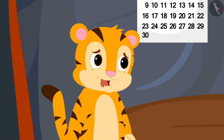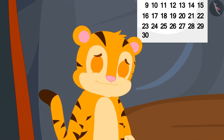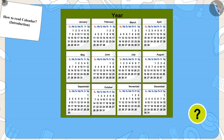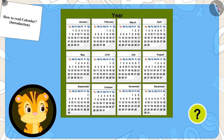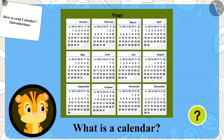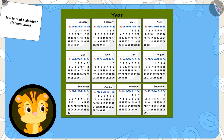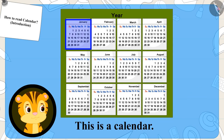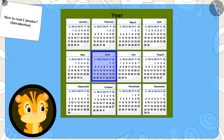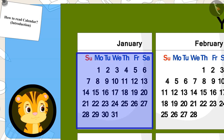He asked his mother, "What is a calendar, Mom?" Kids, do you know what a calendar is? Come see what Sher Khan's mother is explaining to him about the calendar. She is explaining that a calendar depicts the months of the whole year and the days in those months.